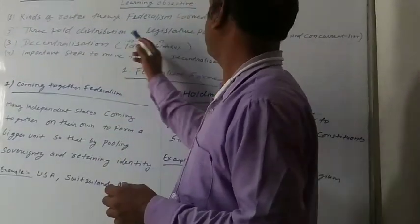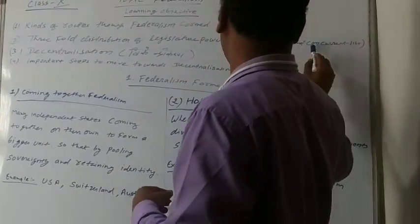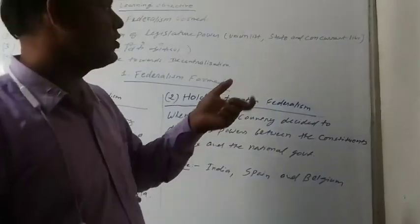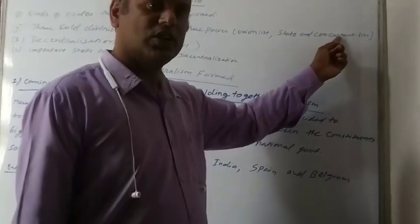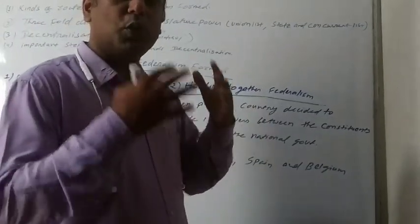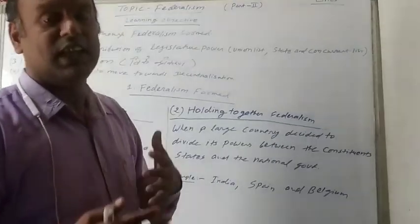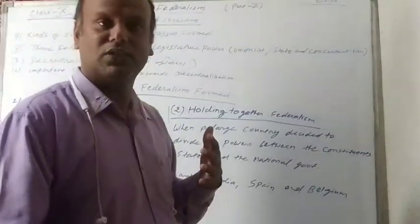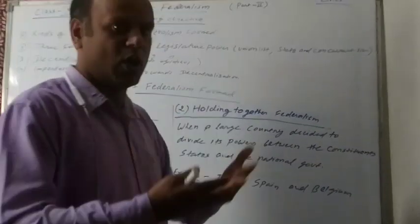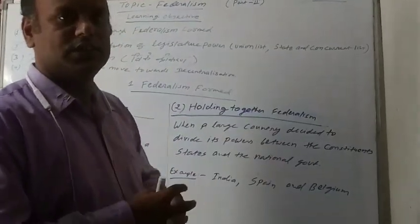The constitution distributes power between the state, central, and local level governments through three lists: the Union List, the State List, and the Concurrent List. What is the Union List? The Union List contains those subjects on which only the union government makes laws — subjects like banking, defense, and currency. Only the central government makes laws for the whole country on these subjects.